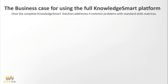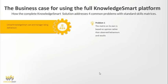So what is the business case for using the full KnowledgeSmart platform? How does the complete solution address the four common problems with standard skills matrices? Problem one: the matrix on its own is based on opinion rather than observed behaviors and results. KnowledgeSmart addresses this with both a user rating and a manager rating — analyzed together or independently — capturing observed behavior and results through the manager rating.